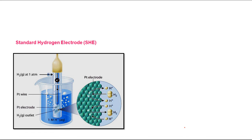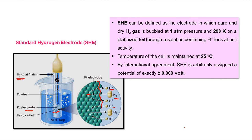Here we have the representation of the Standard Hydrogen Electrode. We have an H⁺ solution in a beaker, hydrogen gas at one atmosphere is bubbled through this solution, there is a platinum electrode, and an outlet for H₂ gas. If we enlarge the platinum electrode surface, H₂ can release electrons and be converted to H⁺, and the opposite process may also occur — H⁺ can accept electrons and be reduced to H₂. SHE is defined as the electrode in which pure dry hydrogen gas is bubbled at one atmosphere pressure.